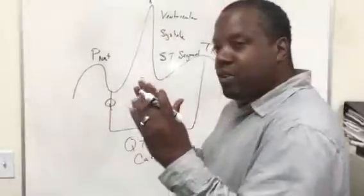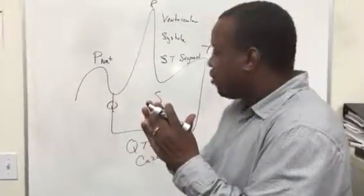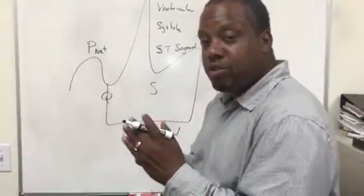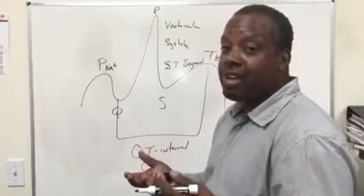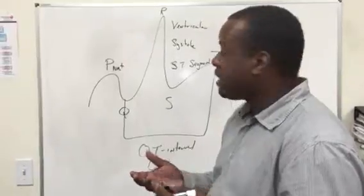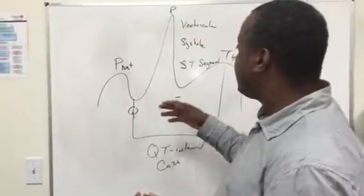When the QT interval is real tight, sometimes it's shorter than what it should be, too tight, too close, then we can see it's hypercalcemia. You also have to check the electrolyte levels, the ionized calcium, the potassium and the sodium.